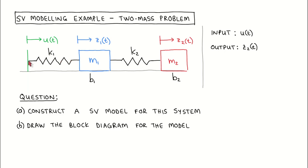We can actuate this connection point and its horizontal displacement is given by u. This is therefore the input to the system. There is a sensor measuring the red object displacement, and the output is therefore given by z2.